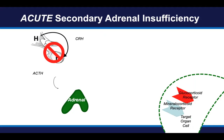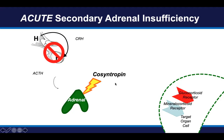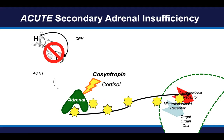Acute secondary adrenal insufficiency refers to a deficiency of ACTH that is relatively short term — days, weeks, or maybe even a couple of months. As a result, the adrenal cortex still remains intact, and if you were to stimulate the adrenal glands with exogenous cosyntropin — an exogenous ACTH-like peptide — the adrenal glands will respond robustly by making cortisol. This proves that the deficiency of ACTH has been short term.